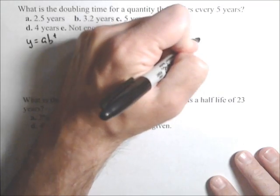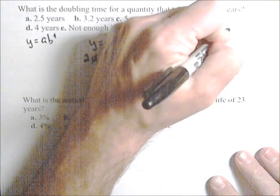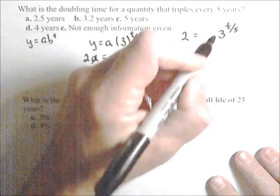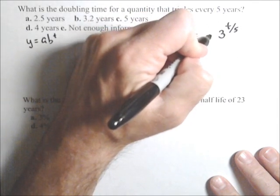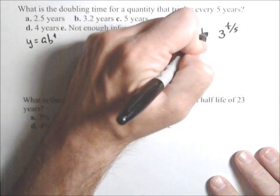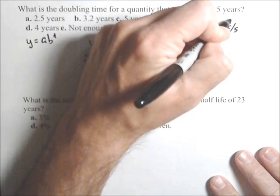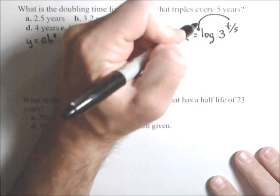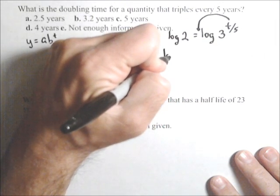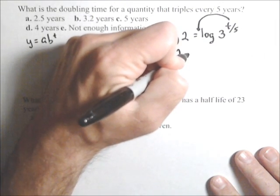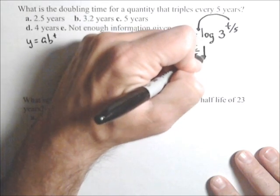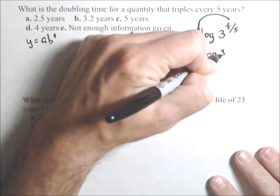So, coming up here, we have two equals three to the t over five, which we'll solve using logs. So, let's take the log of both sides. Or, you could rewrite it using logs, that'd be fine as well. The exponent comes out front. And, I have log of two equals t over five log of three.